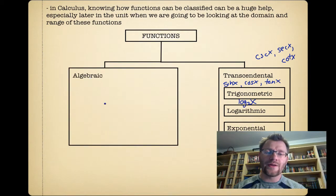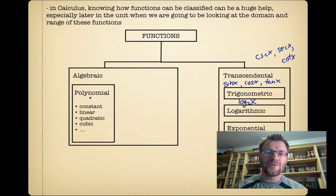You also have something called algebraic functions, and algebraic functions consist of polynomial functions. So polynomial functions are functions that can be written as polynomials, so something like a constant, like x equals 3, that's a constant function.